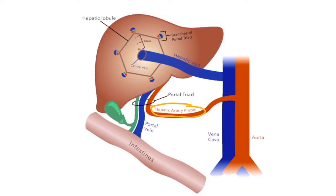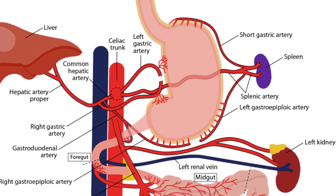The hepatic artery proper is one of three structures that forms the portal triad, as you can see here. This triad is split into multiple tiny branches — little tiny triads — and ultimately the hepatic vein drains the deoxygenated blood and takes it to the IVC. Going back to this image, we can see that the common hepatic artery branches into the hepatic artery proper and the gastroduodenal artery.